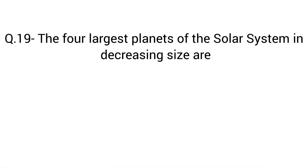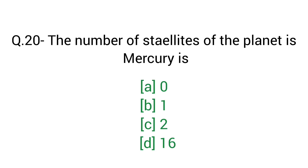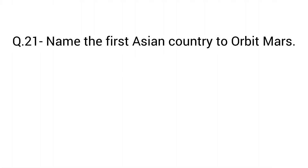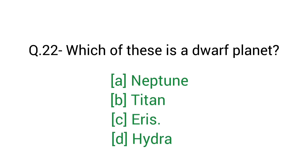Question number 19: The four largest planets of the solar system in decreasing size are? Right answer C — Jupiter, Saturn, Uranus and Neptune. Question number 20: The number of satellites of the planet Mercury is? Right answer A — Zero. Question number 21: Name the first Asian country to orbit Mars. Right answer D — India.